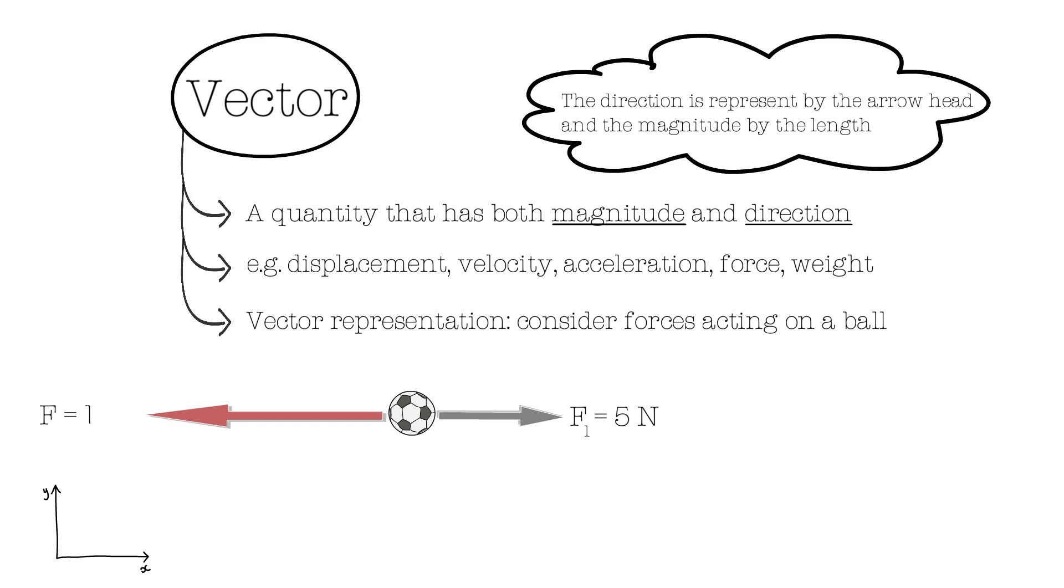Say, a force F2 of 10 Newtons, represented in a red arrow, is acting on the same ball, but in the opposite direction. Taking the right-hand side as the positive, the resultant force on the ball would be 5 Newtons minus 10 Newtons, which would give negative 5 Newtons, or 5 Newtons to the left.